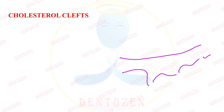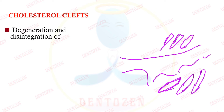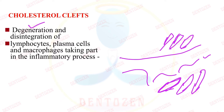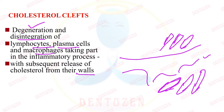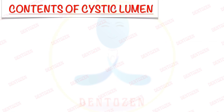We can also see cholesterol clefts — cholesterol crystals lying in the fibrous capsule or in the lumen of the cyst. When a section is made, the cholesterol comes out and leaves a space referred to as cholesterol clefts. The important viva question is: what is the source of this cholesterol? It comes from degeneration and disintegration of inflammatory cells — lymphocytes, plasma cells, and macrophages — which die and release cholesterol from their walls, which accumulates as crystals. Another source is circulating plasma lipids.